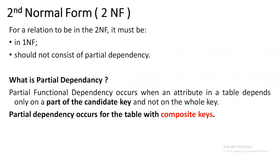For the second normal form, the condition is that your table should first satisfy the rules of first normal form. If it satisfies 1NF, the next step is to verify whether it is having partial dependency or not. If your table is having partial dependency, then that table is not in 2NF. You should normalize it into 2NF so that you eliminate the partial dependency.